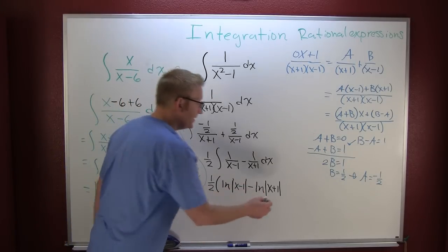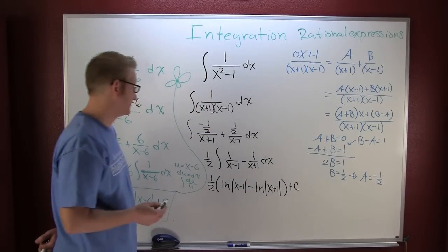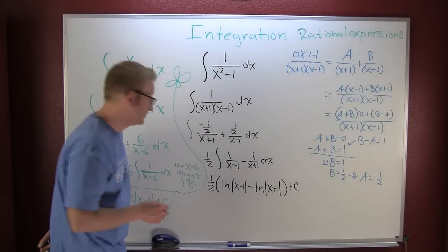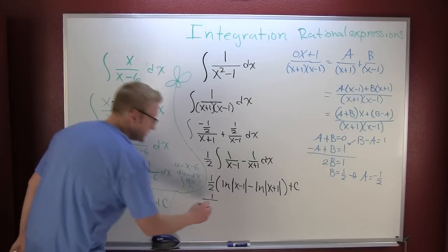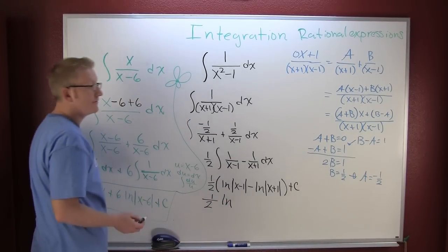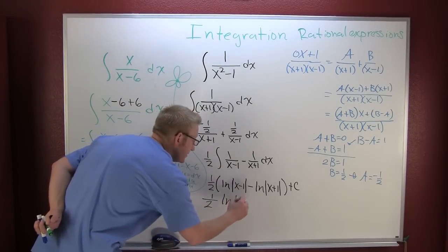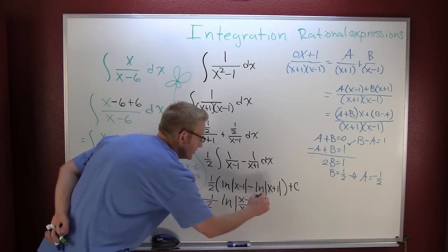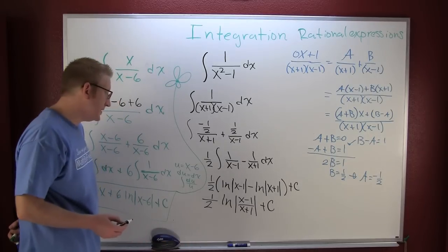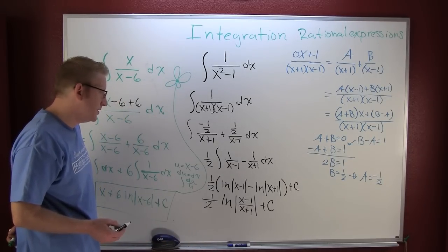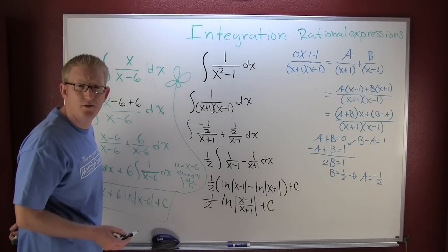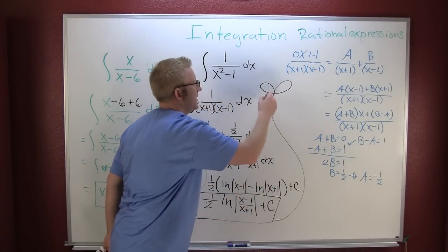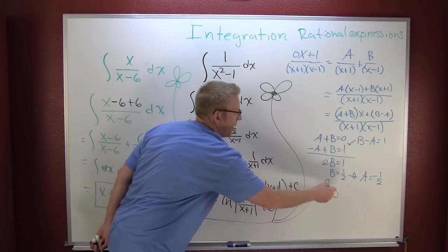And then I'm going to add my c, plus c. Now I can use some properties of logarithms and I can add them. So this is one over 2 times the natural log of the difference of those absolute values, x minus 1 over x plus 1, plus c.